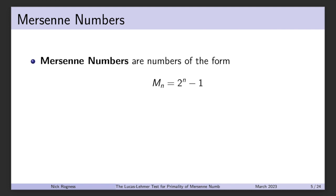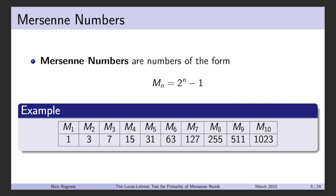Mersenne numbers are numbers of the form M_n, where M_n equals 2 to the nth power minus 1. The first 10 Mersenne numbers are listed here: the first is 1, then 3, 7, and so on. By the time we get to M7, we're already over 100, and M10 is 1,000.